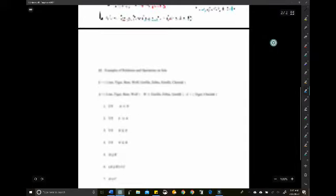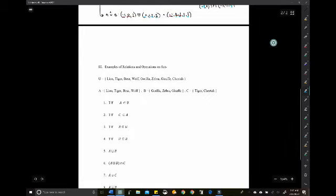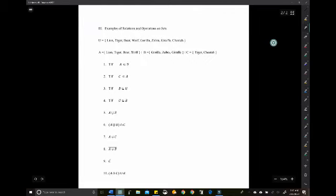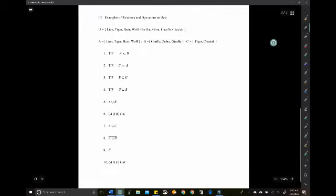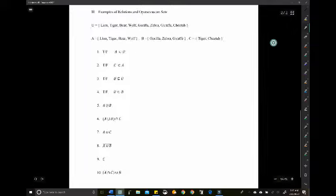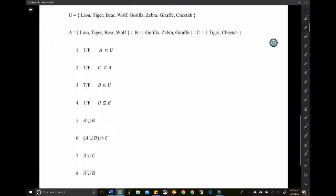Another way to look at these is with items. Now we have Lion, Tiger, Bear, Wolf, Gorilla, Zebra, Giraffe, and Cheetah. That's our universe. Set A is Lion, Tiger, Bear, Oh My, and Wolf. B is Gorilla, Zebra, and Giraffe. And C is Tiger and Cheetah.